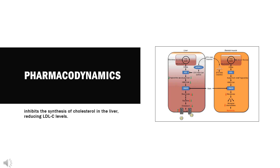Pharmacodynamics: Bempedoic acid inhibits the synthesis of cholesterol in the liver, reducing LDL-C levels. This reduces the development of atherosclerotic plaques that may increase the risk of cardiovascular events. Earlier clinical trials showed a dose-dependent reduction of LDL-C levels in addition to decreased LDL particle number, reduced levels of apolipoprotein B, non-HDL cholesterol, and high-sensitivity C-reactive protein. Due to its unique mechanism of action, Bempedoic Acid is not associated with myositis, an adverse effect that frequently accompanies statin therapy. More recent trials have supported that this drug significantly decreases LDL-C levels after 12 weeks of therapy and provides additional lowering of LDL-C when combined with ezetimibe and statin therapy. Effects of Bempedoic Acid on mortality are currently unknown.